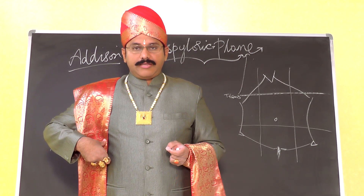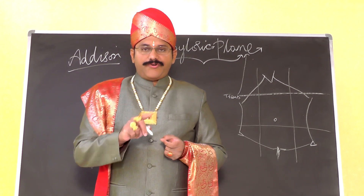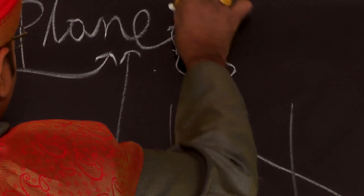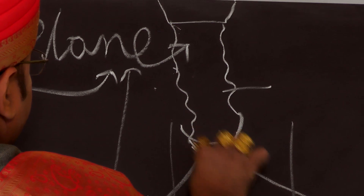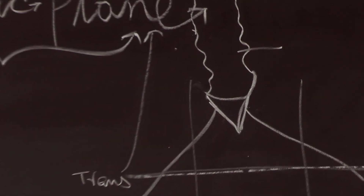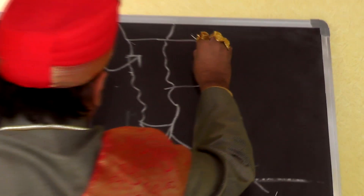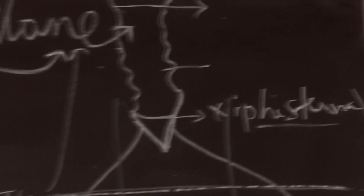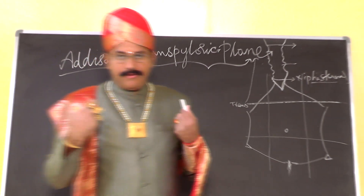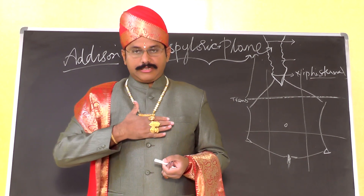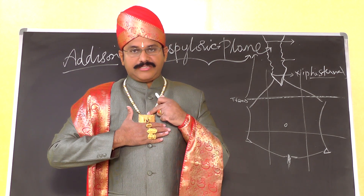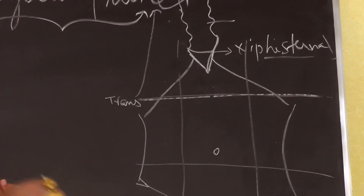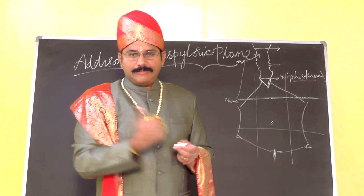A second way of drawing it is to identify the body of the sternum, the manubrium, the manubriosternal joint, and the xiphisternal joint — between the xiphoid process and the body of the sternum. From the xiphisternal joint, one hand-breadth below it on the body gives the horizontal plane, and that is the transpyloric plane or Edison's plane.